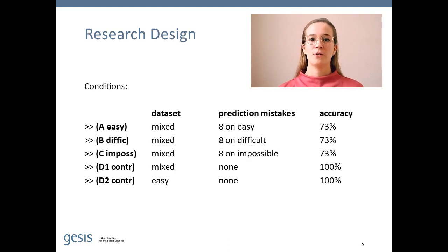From the three sentence groups, we constructed two smaller data sets for our experiments. A mixed data set with 10 sentences from each group, and also an easy data set with 30 sentences only from the easy group. Then we simulated different classifiers that made mistakes on different sentence types.